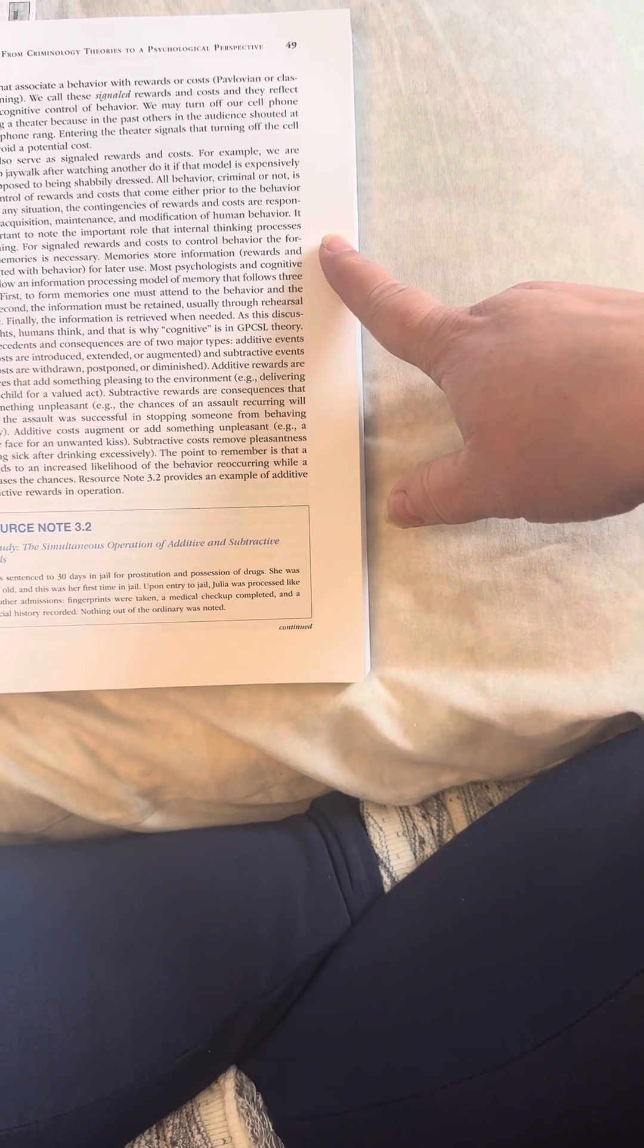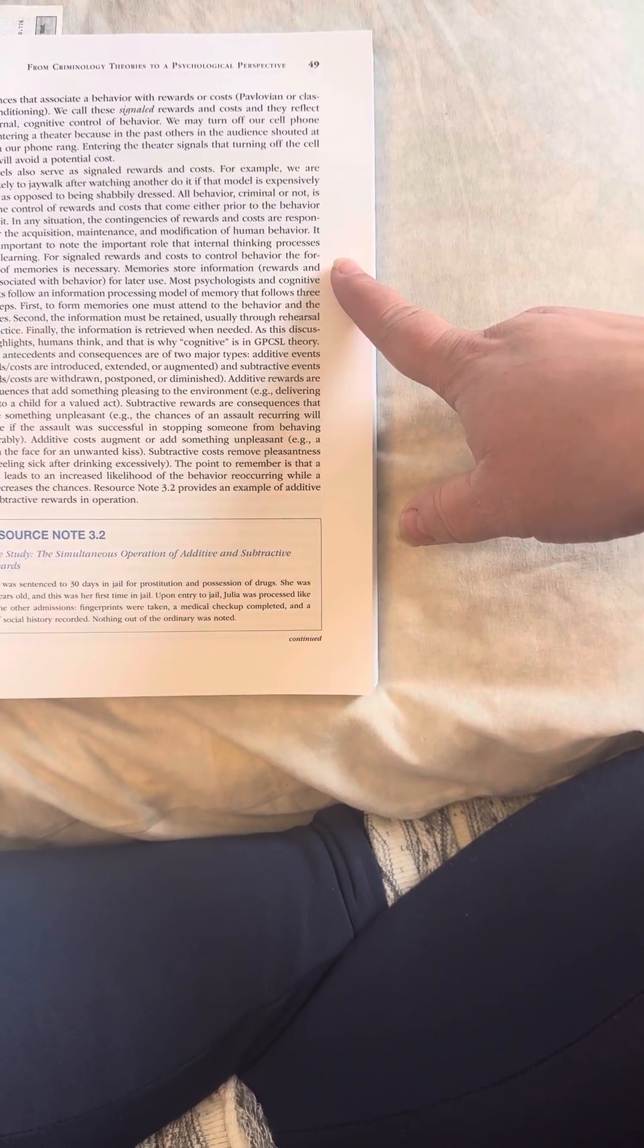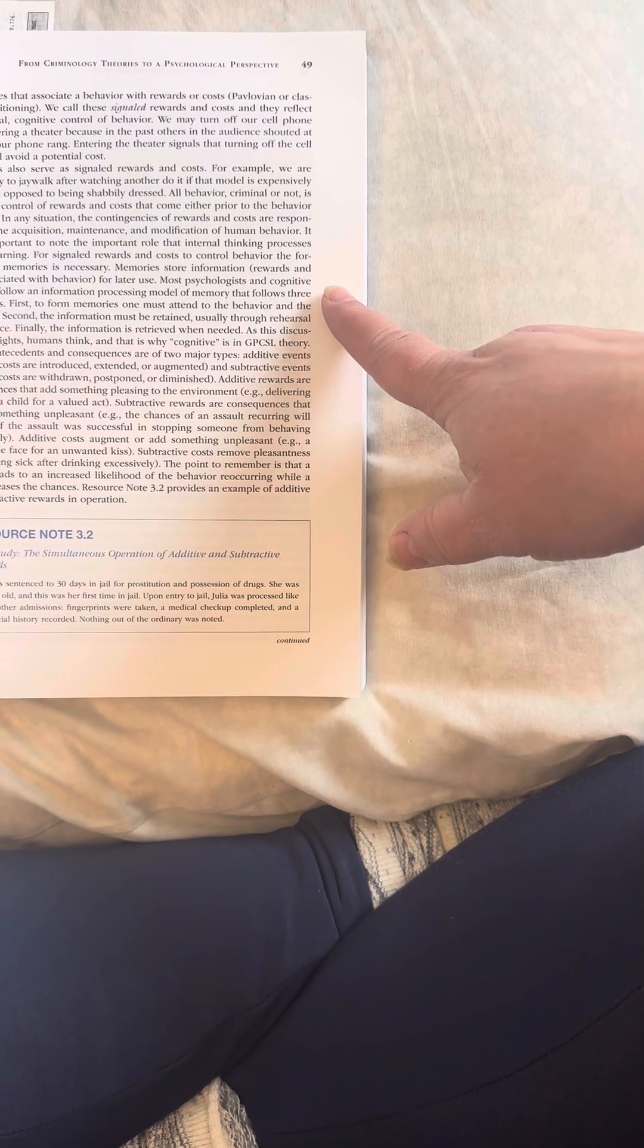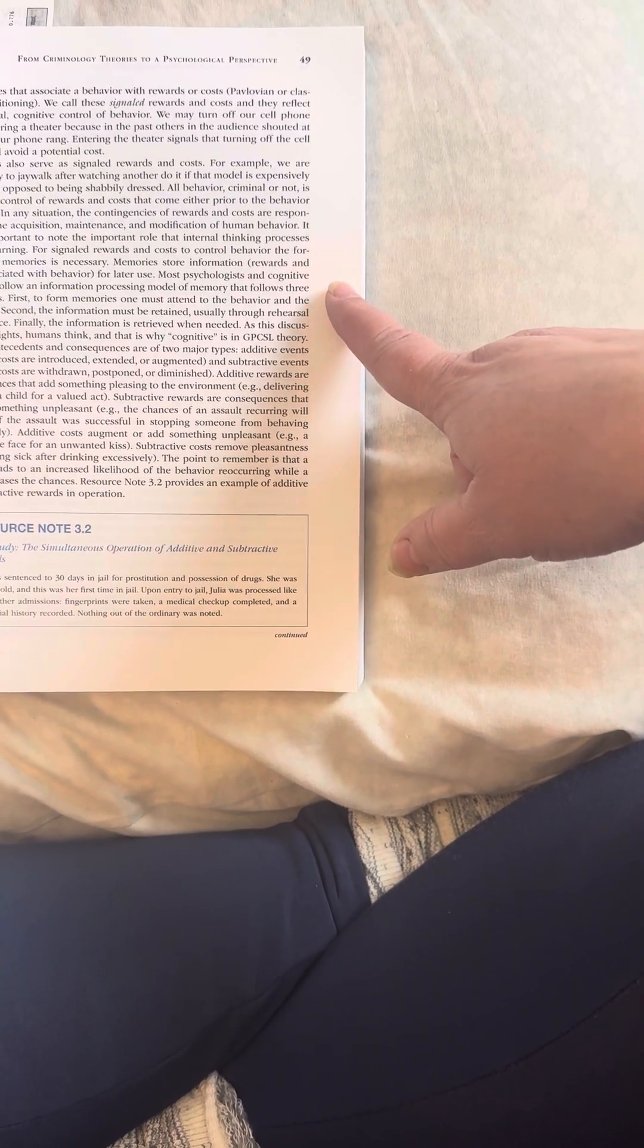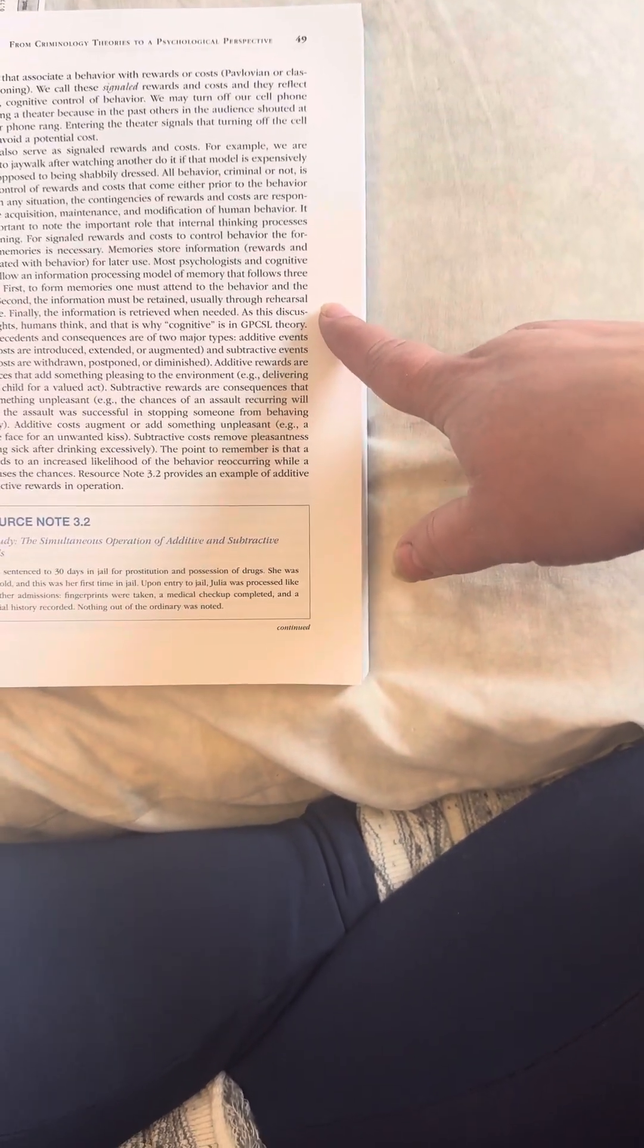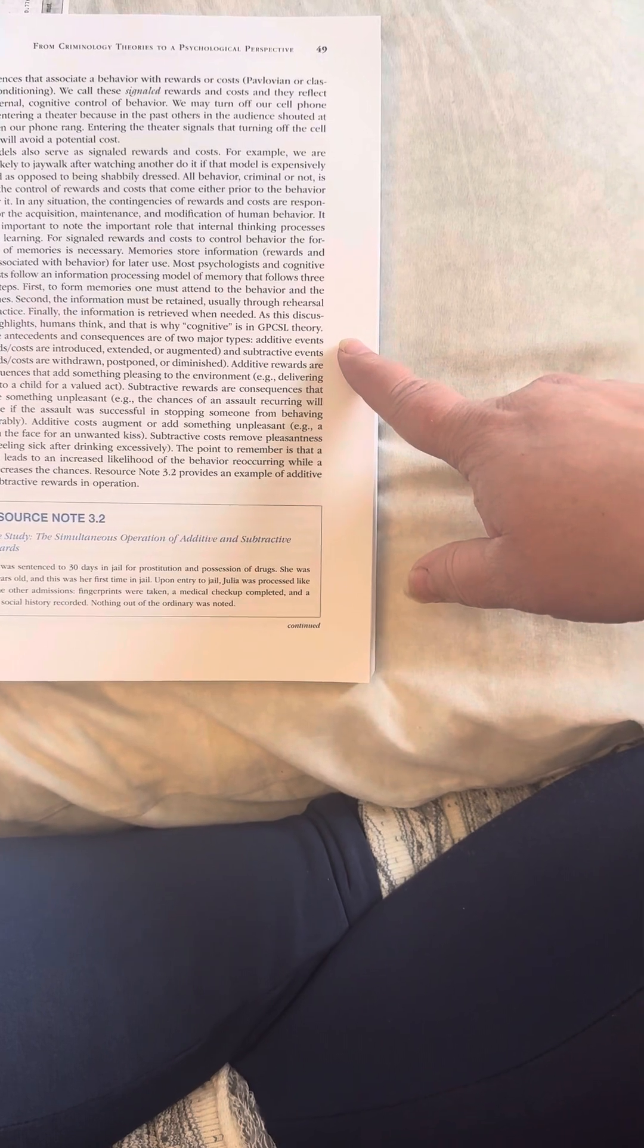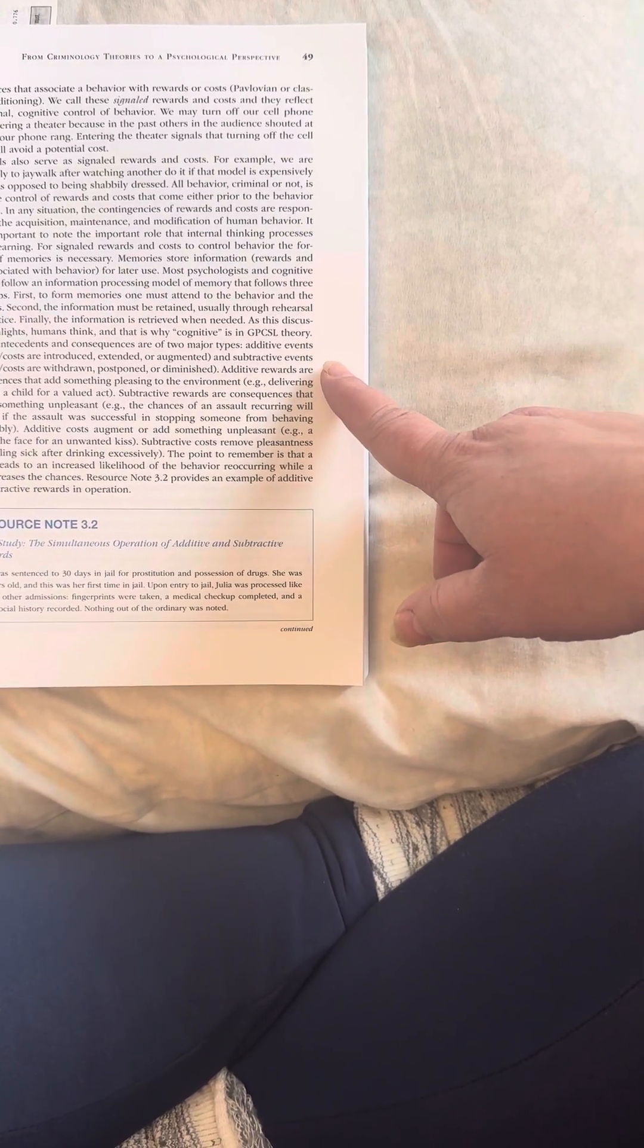In any situation, the contingencies of rewards and costs are responsible for the acquisition, maintenance, and modification of human behavior. It is also important to note the important role that internal thinking processes play in learning. For signaled rewards and costs to control behavior, the formation of memories is necessary. Memories store information, rewards, and costs associated with behavior for later use. Most psychologists and cognitive scientists follow an information processing model of memory that follows three basic steps. First, to form memories, one must attend to the behavior and the outcomes. Second, the information must be retained, usually through rehearsal and practice. Finally, the information is retrieved when needed. This discussion highlights that humans think and that is why cognitive is in GPCSL theory.